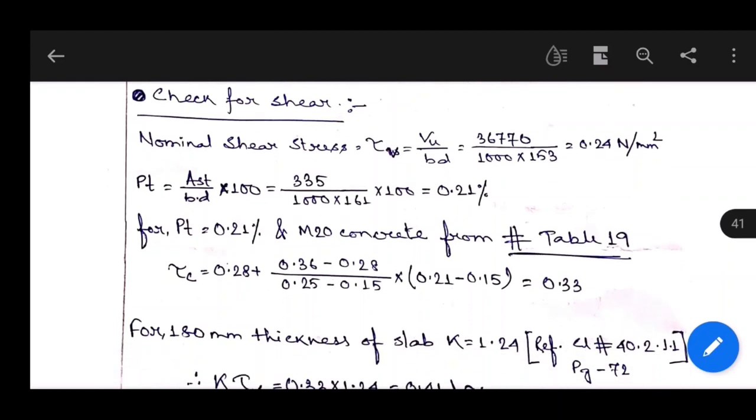Next step is check for shear. Nominal shear stress tau_v equals Vu by bd. We calculated earlier Vu is 36,770, so tau_v equals 36,770 divided by 1000 times 153, equals 0.24 N/mm². Percentage of steel AST by bd times 100.